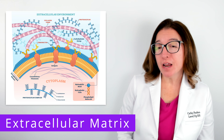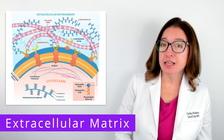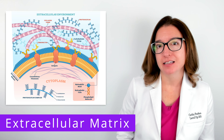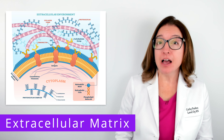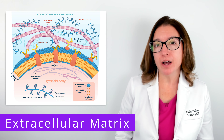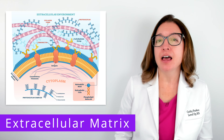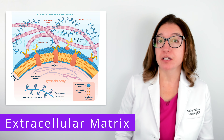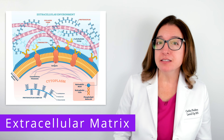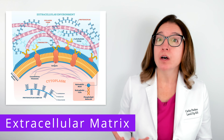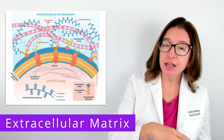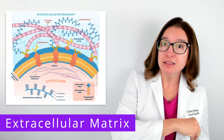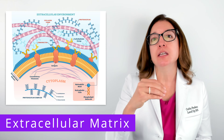Cells that don't have a cell wall, such as animal cells, produce an extracellular matrix. This is a network of proteins and carbohydrates that helps to protect the cell. The extracellular matrix also allows the cell to attach to other cells, and it transmits signals from outside the cell to the inside.